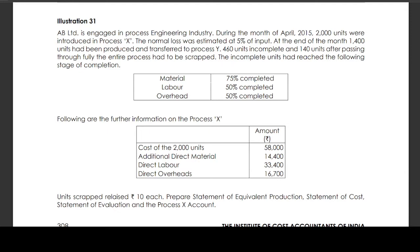The incomplete units had reached the following stage of completion. For material, 75% is completed. For labor, 50% is completed. For overhead, 50% has been completed. Following are the further information on process X.